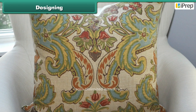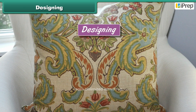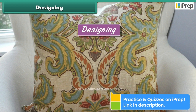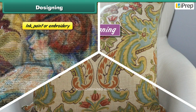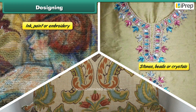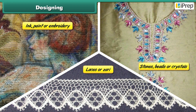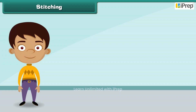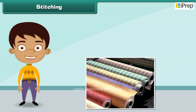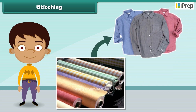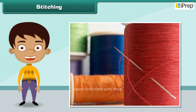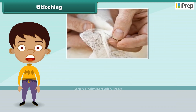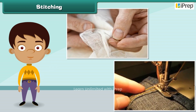The beauty of a fabric can be enhanced by making patterns on it through the process of designing. Fabrics can be designed with ink, paint, embroidery, stones, beads, crystals, laces or zari. Stitching is the process by which fabrics are converted into clothes. It involves sewing a fabric with needle and thread. In olden days stitching was done by hand, but nowadays it is done with machines.